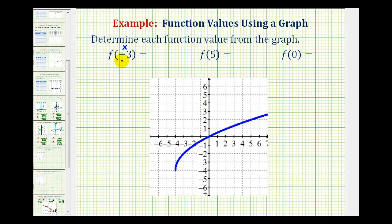So to do this graphically, we'll first go to negative three on the x axis, which is here, and then go down to the function. So here's the point we're considering, and the y coordinate of this point is going to be the output or the function value.